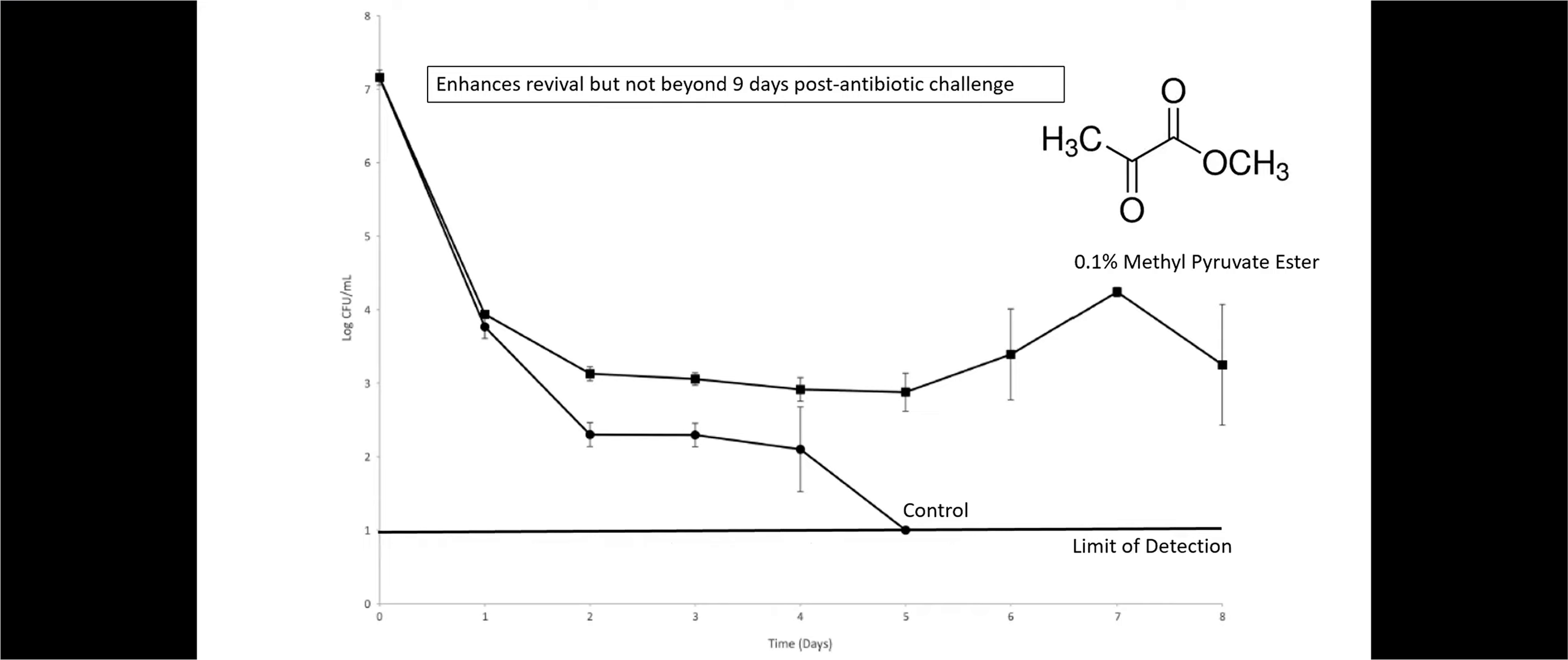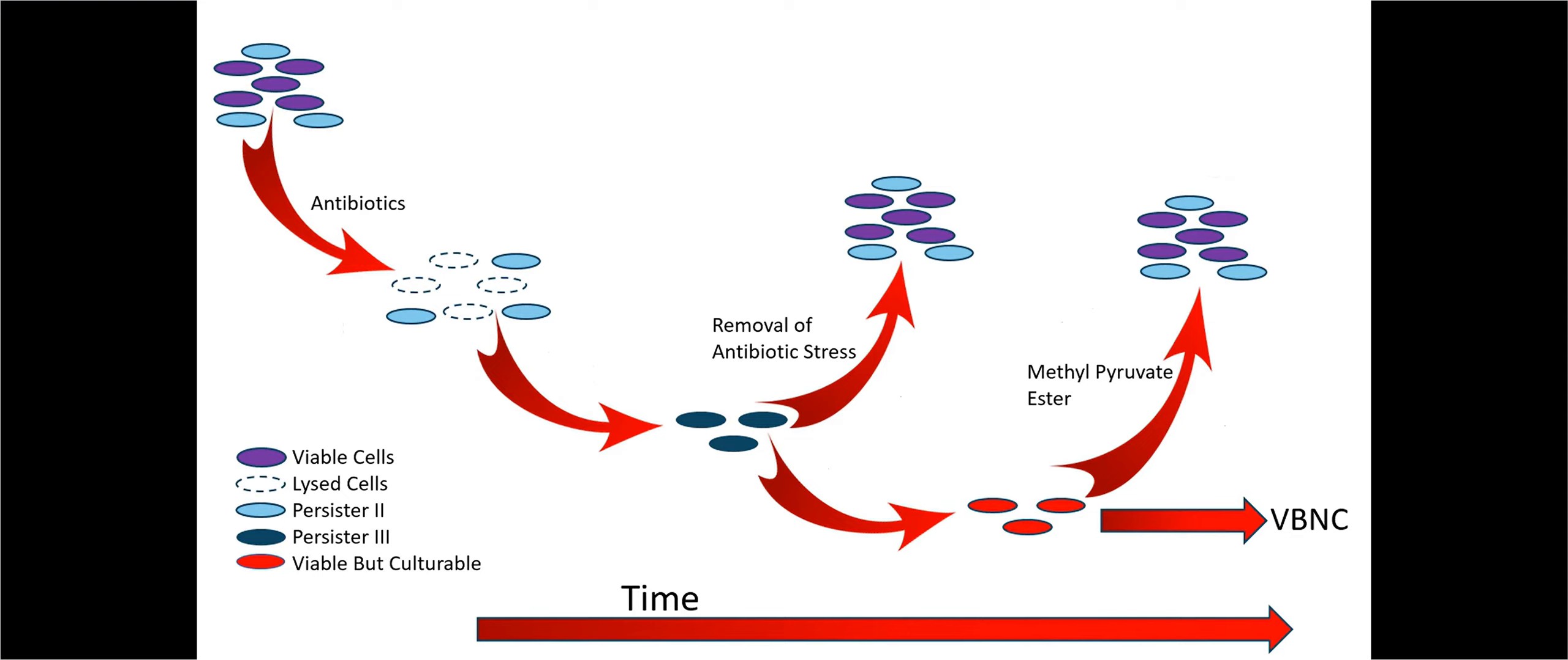Now, the problem is, though, if you start leaving the persister population beyond about five days, suddenly what happens is it doesn't revive. It basically goes non-culturable. But if you add a reagent to it like methyl pyruvate, it revives the cells to a degree. But past nine days, basically it doesn't. So basically, we had this model.